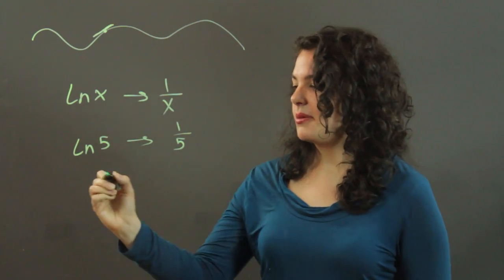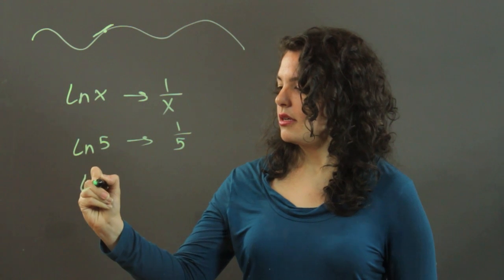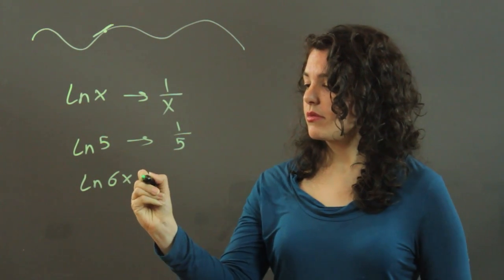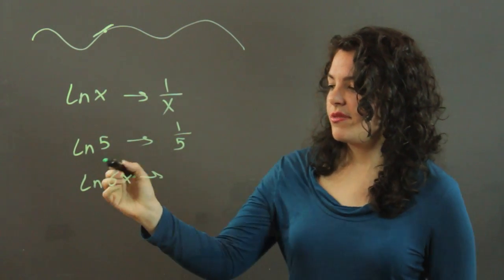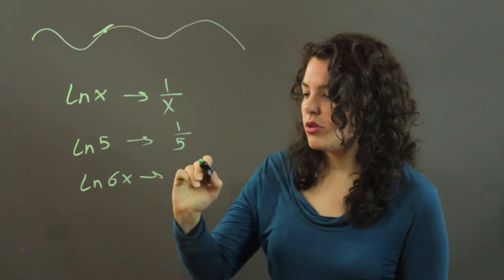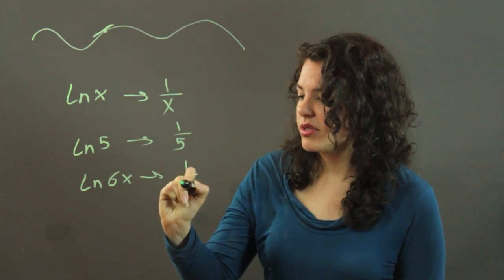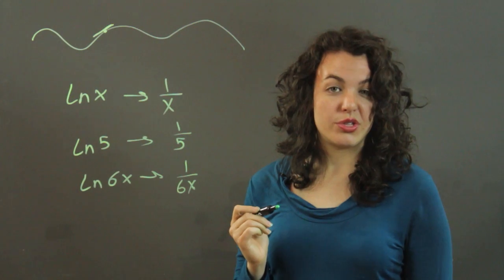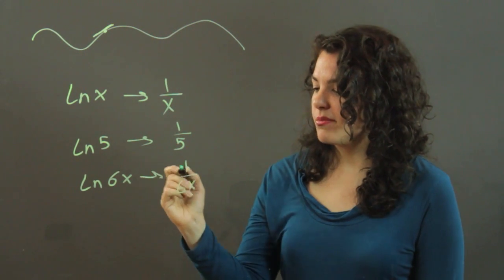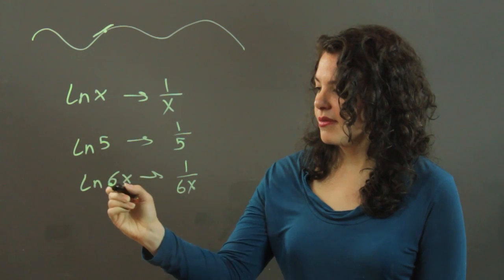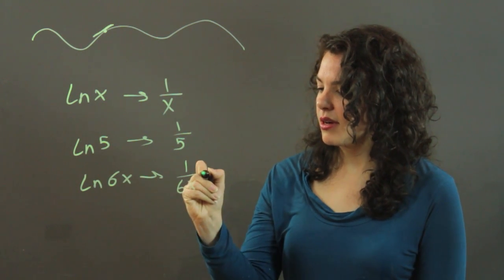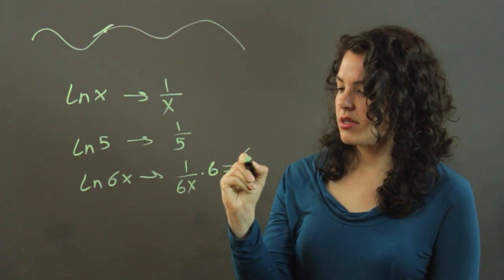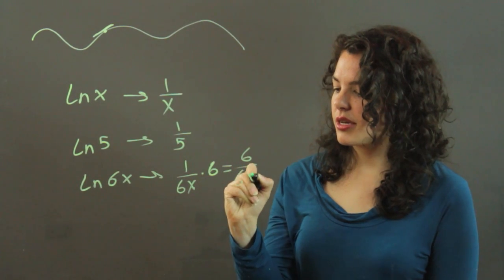If you have something maybe a little more complex, like the natural log of 6x, when you take the derivative, you not only have 1 over 6x, but if you're familiar with derivatives, we need to use the chain rule. And we'll have to multiply by the derivative of 6x itself. And the derivative of 6x is 6. So we get 6 over 6x.